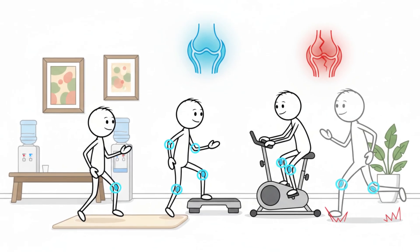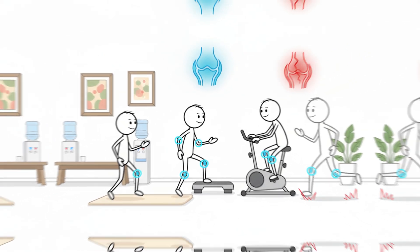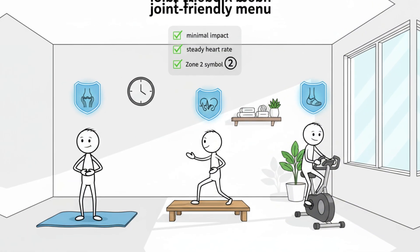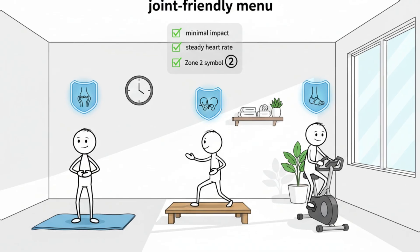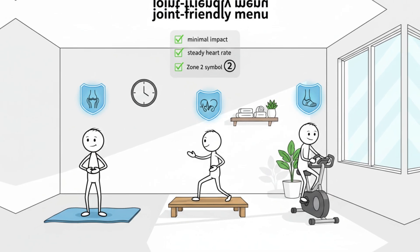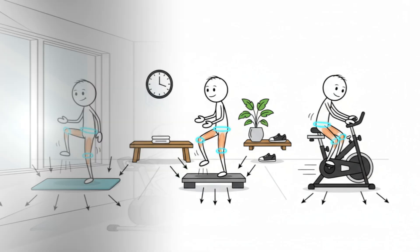For those with knee or hip pain, movements like slow marches, step-ups with low height, and stationary cycling tend to be the most joint friendly. These activities distribute load more evenly and allow the muscles to support the joints rather than overloading them.